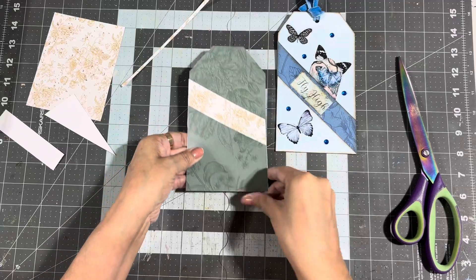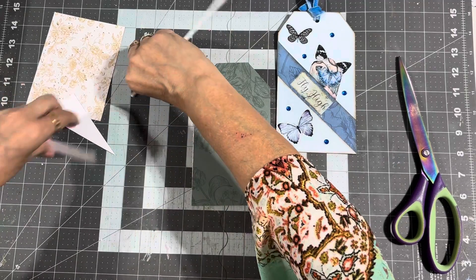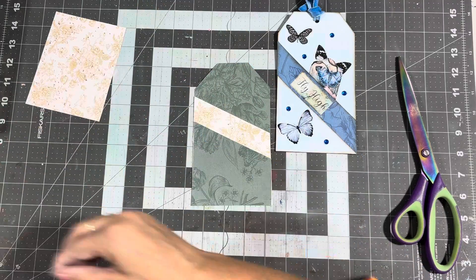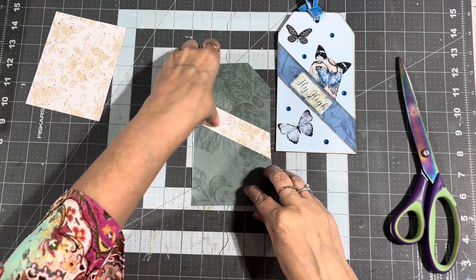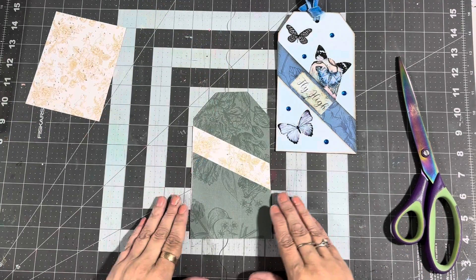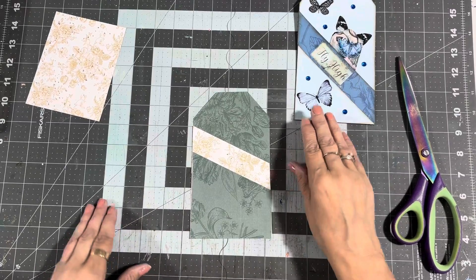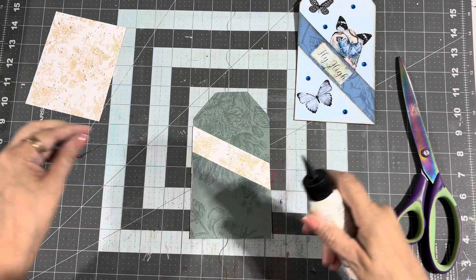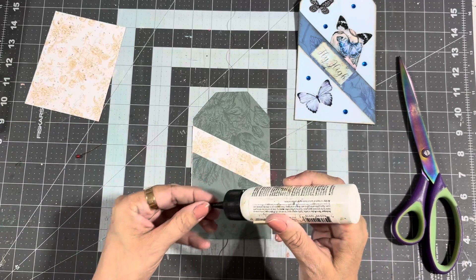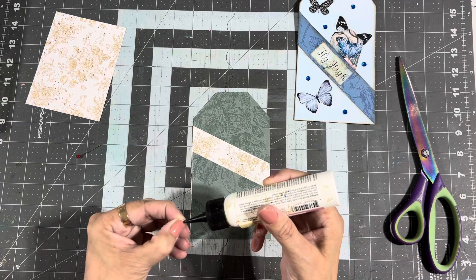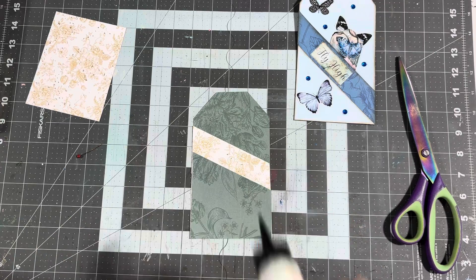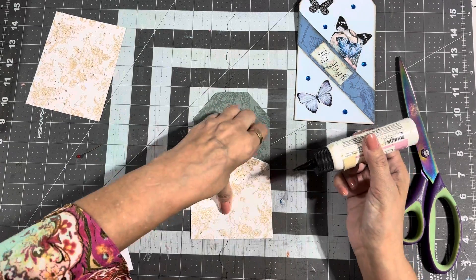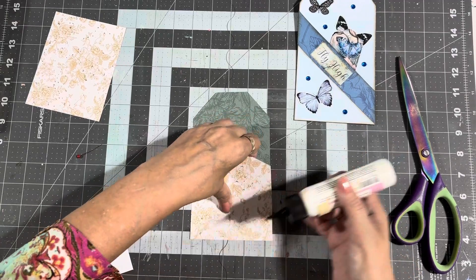Now we just glue these and like I said, I save all these pieces for collaging and different things. They're not wasted and we're going to glue this just like this. They're so cute. Okay, and you glue the two sides and the bottom.